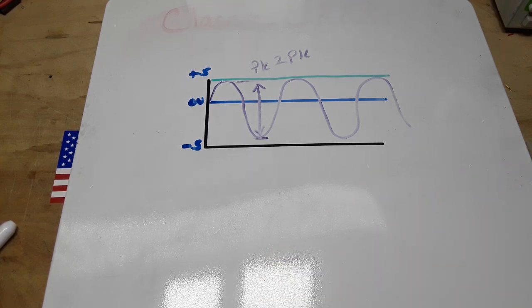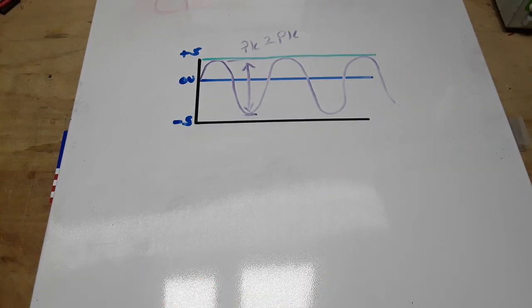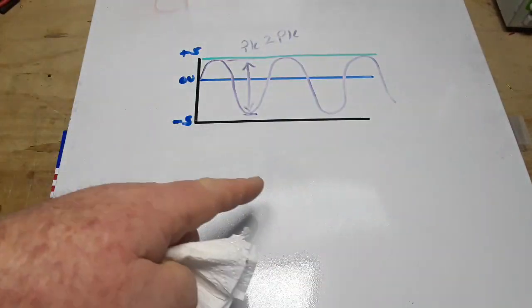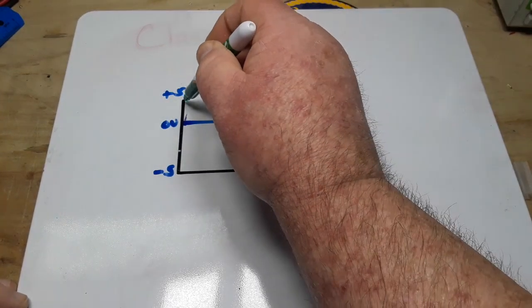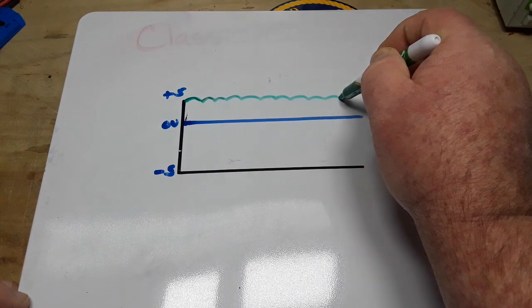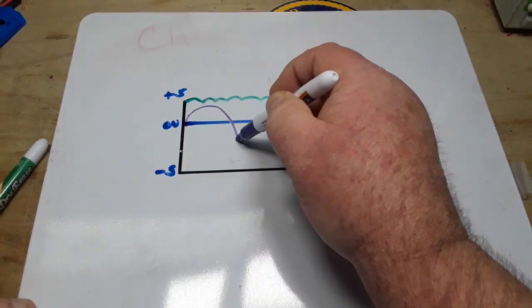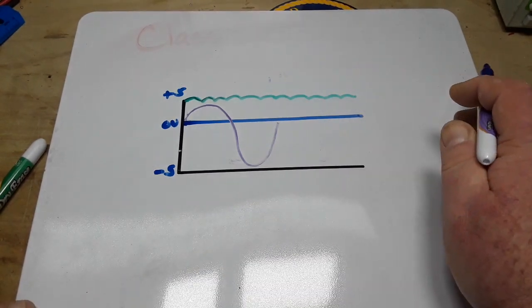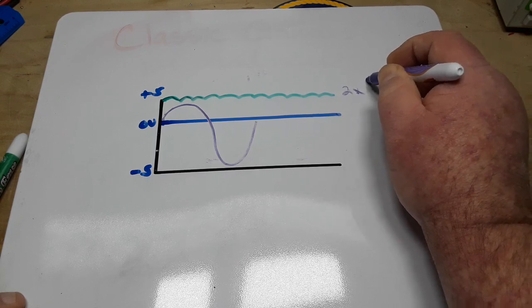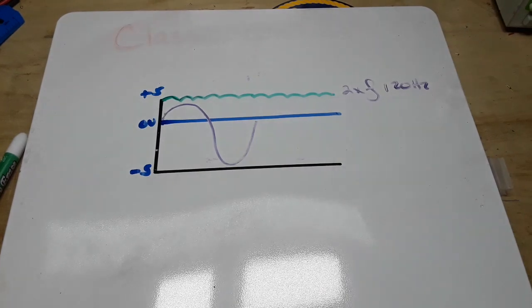Well we rectify it either with a discrete full bridge rectifier or you can get it in an IC package. Here's what happens then. Instead of this purple sine wave with our 5 volt peak to peak, what we end up with is something that looks more like this. Now remember our original sine wave looked kind of like this and it was at 60 Hertz here in the US or 50 Hertz if you're in the UK. What we're gonna have here after rectified is going to be twice the frequency. So we might be looking at 120 Hertz or 100 Hertz.